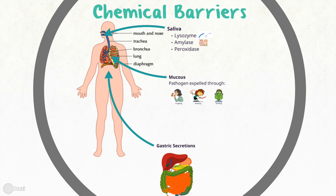Aside from the physical barriers, our body has many chemical barriers in place to eliminate foreign substances before they become harmful. Chemical barriers are not localized to one part of the body, since pathogens can enter from many different routes and evade immune mechanisms to travel further into the body. Examples of chemical barriers include saliva, mucus, and gastric or digestive acid.